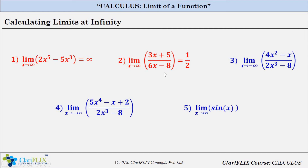Keep in mind that whenever you have rational functions and need to find limits at infinity — whether positive or negative infinity — you just need to take out the highest power of x from the denominator, do the same for the numerator, and then cancel. Let us understand this using another example.